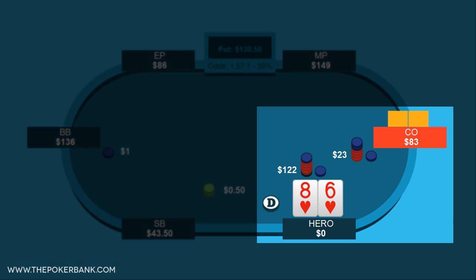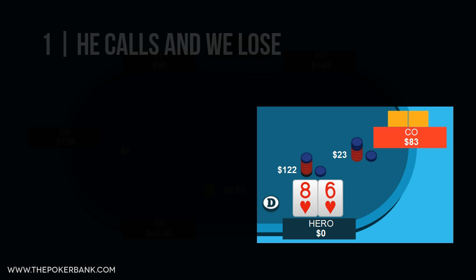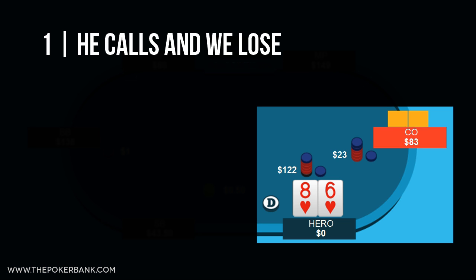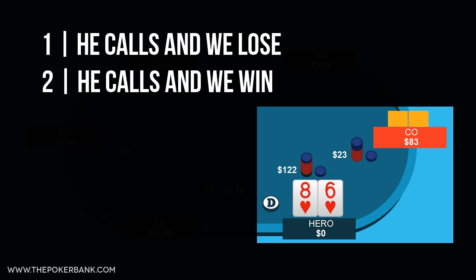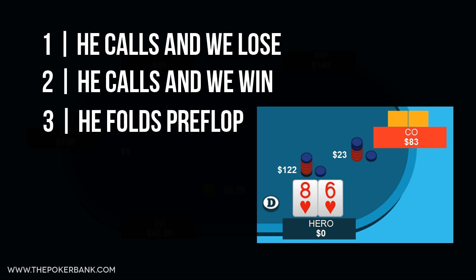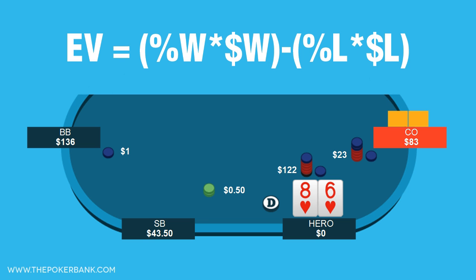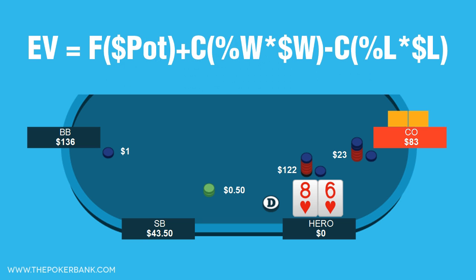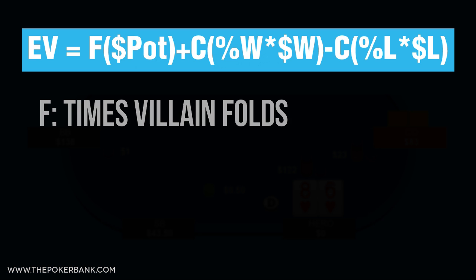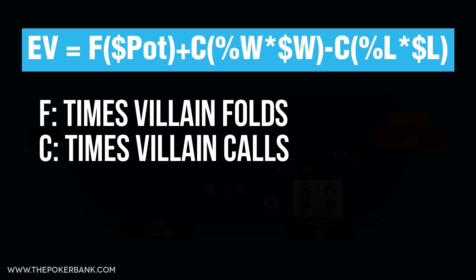Once we shove there are three things that can happen: 1. He calls and we lose. 2. He calls and we win. Or 3. He folds and we win preflop. So at this point the basic EV formula needs to be expanded to account for each outcome. The expanded formula looks like this: EV equals F times pot, plus C times percentage W times money W, minus C times percentage L times money L. Where F stands for the times villain folds and C stands for the times villain calls.